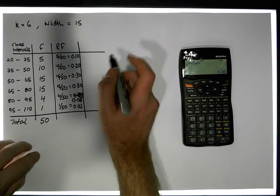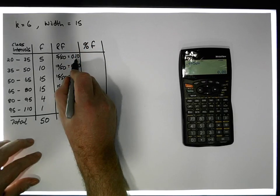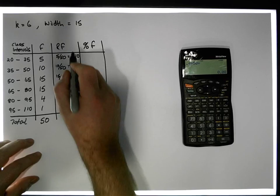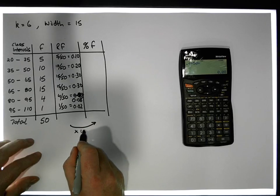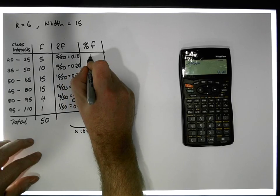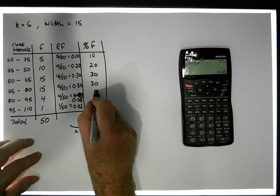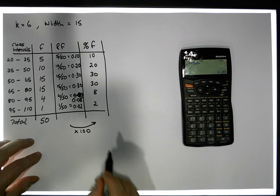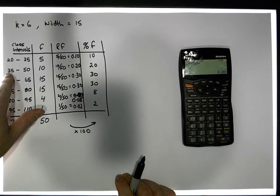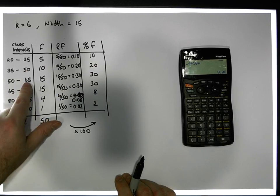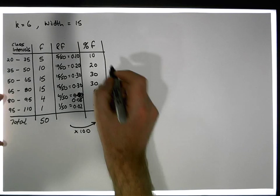Once we have relative frequencies, we can construct percentage frequencies — small f percent — which are simply the relative frequencies scaled to a range of 0 to 100. We multiply each by 100: 0.10 gives 10%, 0.20 gives 20%, 0.30 gives 30%, 0.30 gives 30%, 0.08 gives 8%, and 0.02 gives 2%. So 10% of observations were between 20 and 35, 20% between 25 and 50, 30% between 50 and 65, and so on.